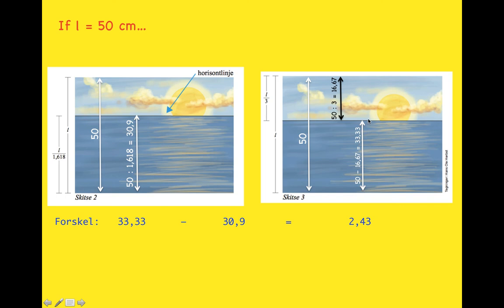Now, you could just as well have done that working it out from the top, and you'd have still got a 2.43 centimeter difference between the two horizon lines, so that doesn't really matter. But I did it that way from the bottom. So 33.33 minus 30.9.